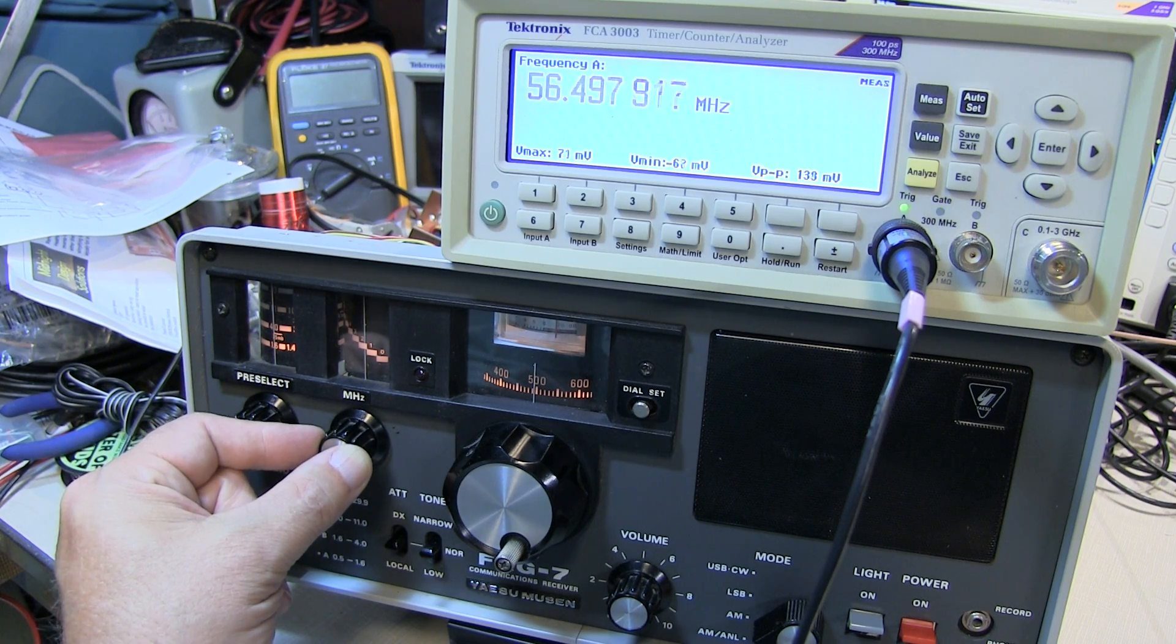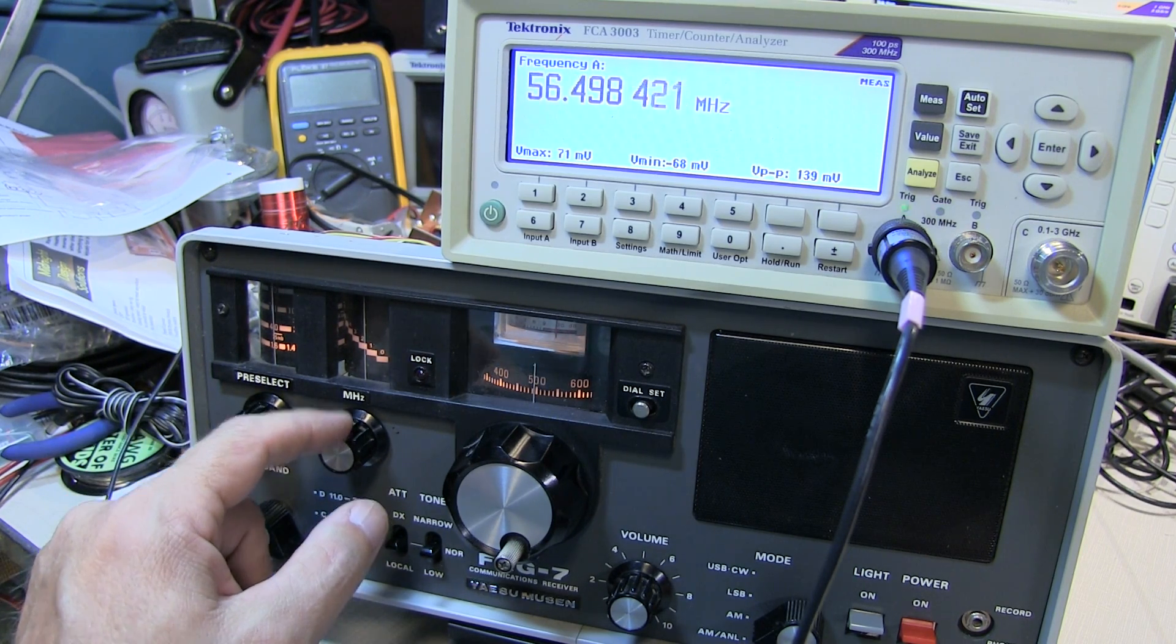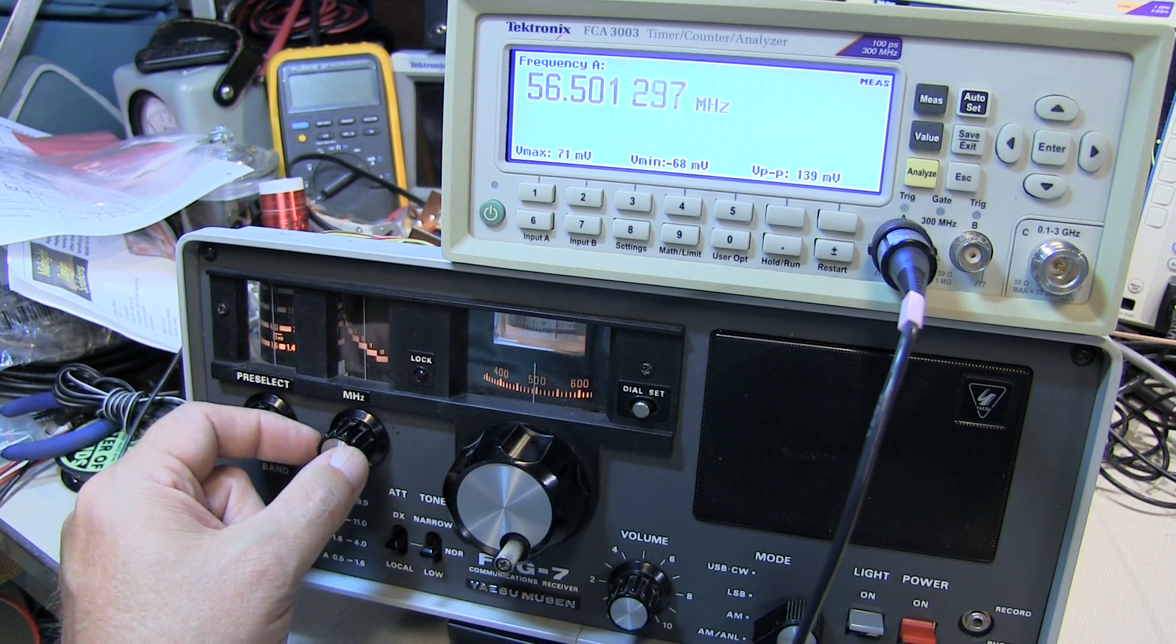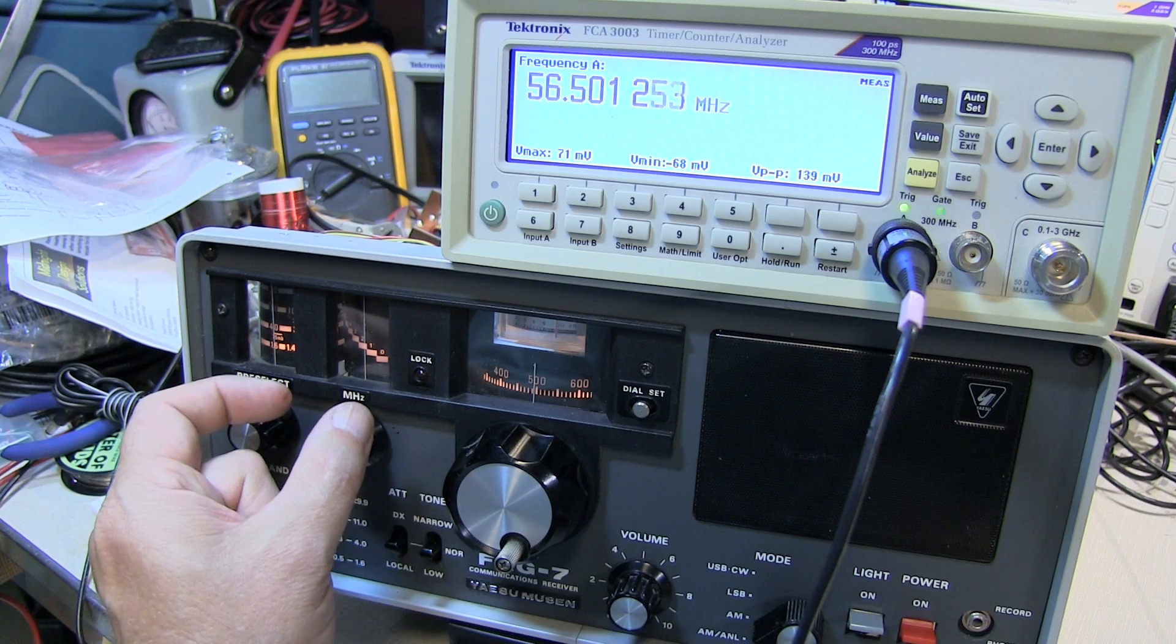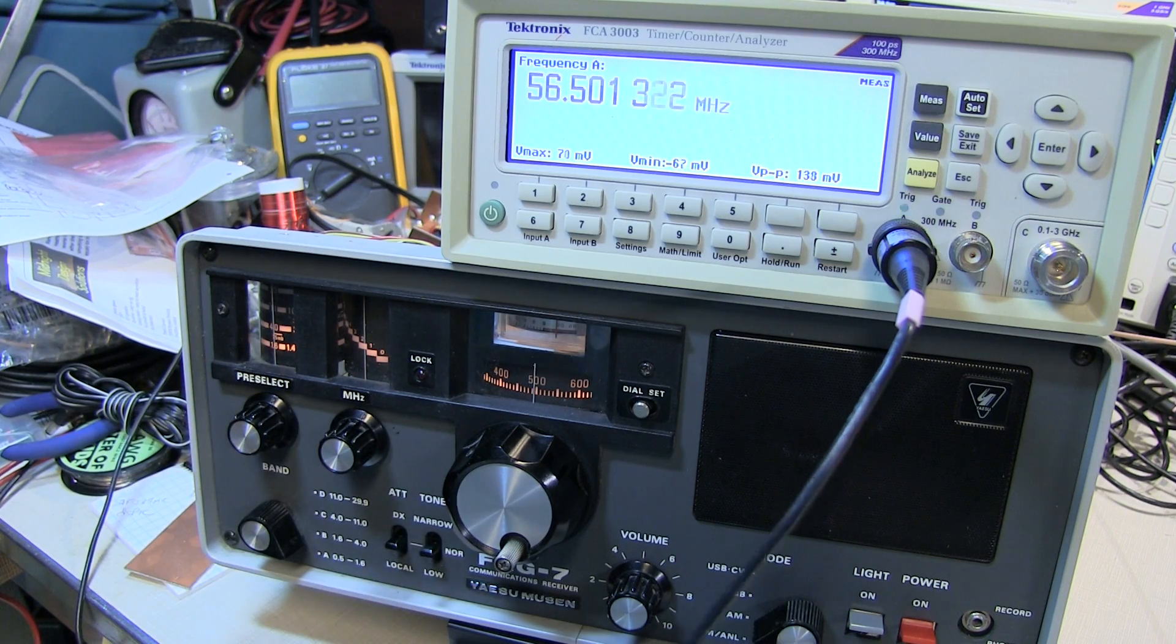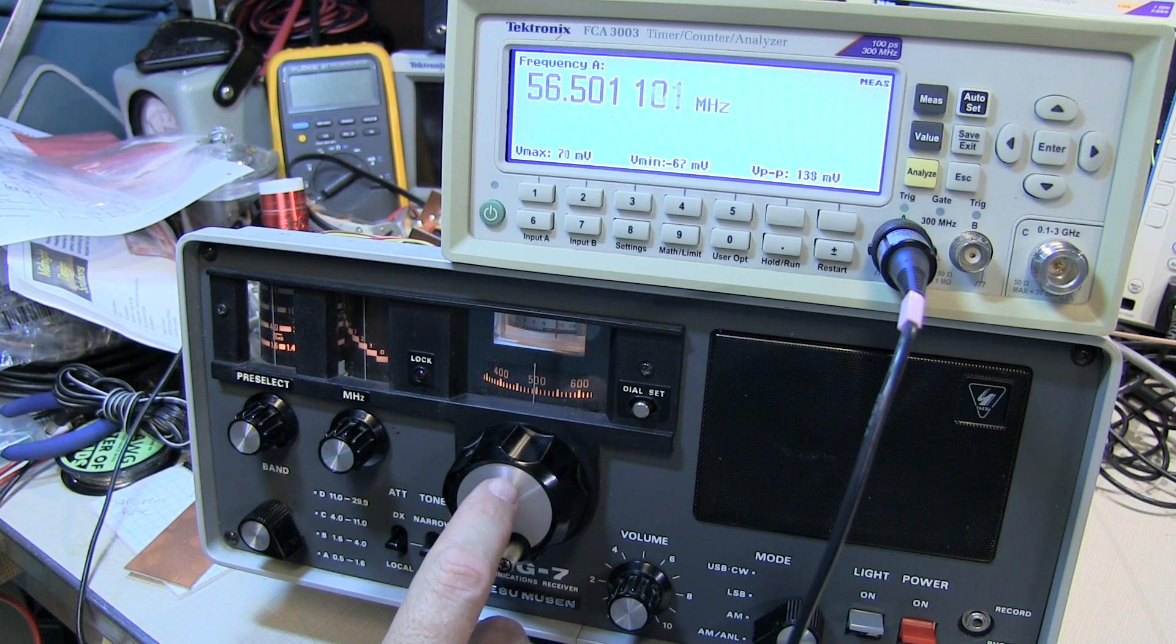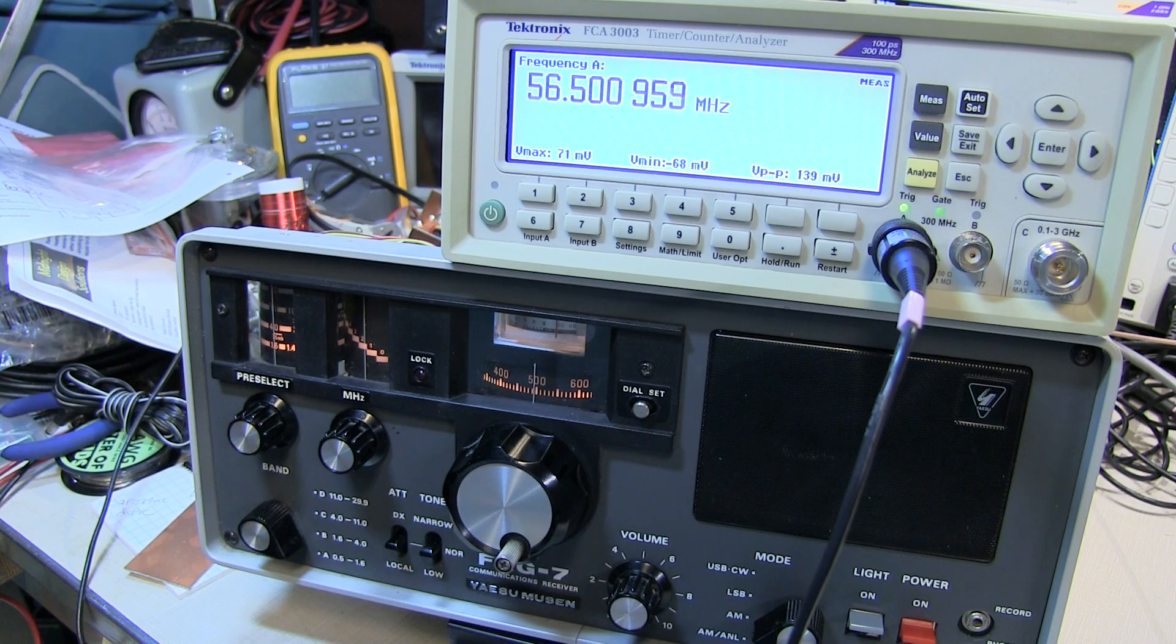Because that Wadley loop is canceling that drift from the wideband VFO. So what this allows us to do is select a 1 MHz frequency range, and then tune through that using a second VFO, whose frequency stability is controlled by a crystal oscillator, thus very stable.